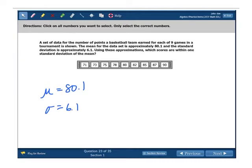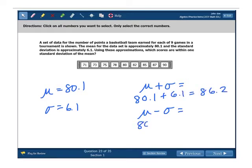Using these approximations, which scores are within one standard deviation of the mean? Well, when we say within one, that means one standard deviation above the mean and one standard deviation below the mean. And these values are going to be found by actually taking the numbers and adding them to find the above value, 86.2, and subtracting them to find the below value, which would be 74. So that's our above and below values. So what we're looking for is we're looking for numbers that are bigger than 74 and smaller than 86.2. So which ones would that be? Well, bigger than 74 would be 75, 78, 80, but still smaller than 86.2. We go all the way out to that 85. So we'd select those five numbers in the center.